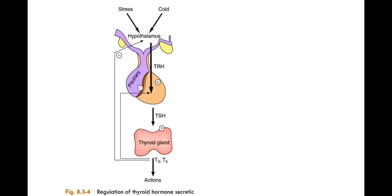With stimuli like stress or cold, the hypothalamus releases TRH, or thyroid releasing hormone. TRH acts on the anterior pituitary — not the posterior pituitary — to cause the release of TSH. The posterior pituitary releases ADH and oxytocin.